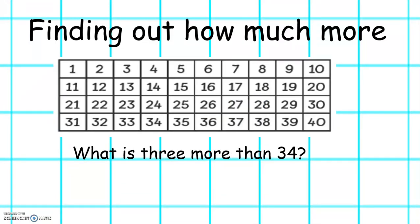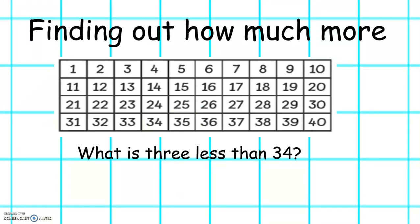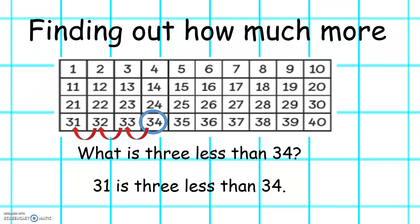Let's find out what number is three more than 34. Let's find 34 first of all, and let's find three more. So we're going to count on three: one, two, three. What number do we land on? Well done. 37 is three more than 34. Let's find what number is three less than 34. Let's find 34 again, and this time we're going to count back: one, two, three. 31 is three less than 34.